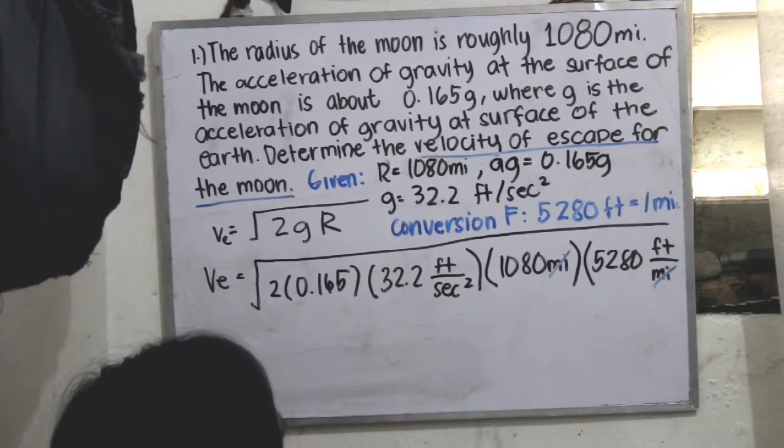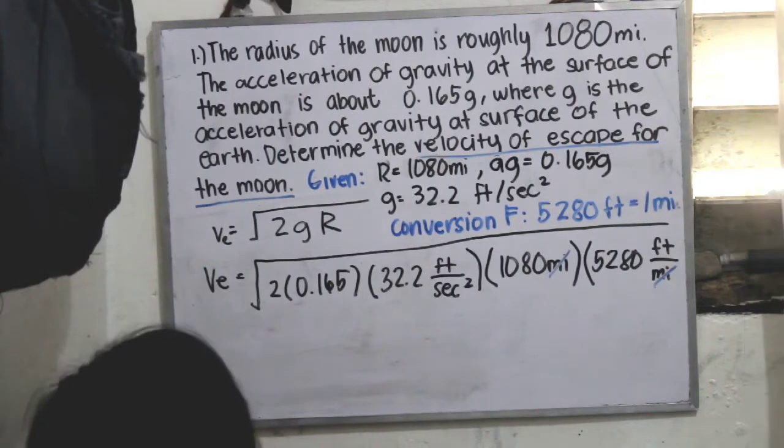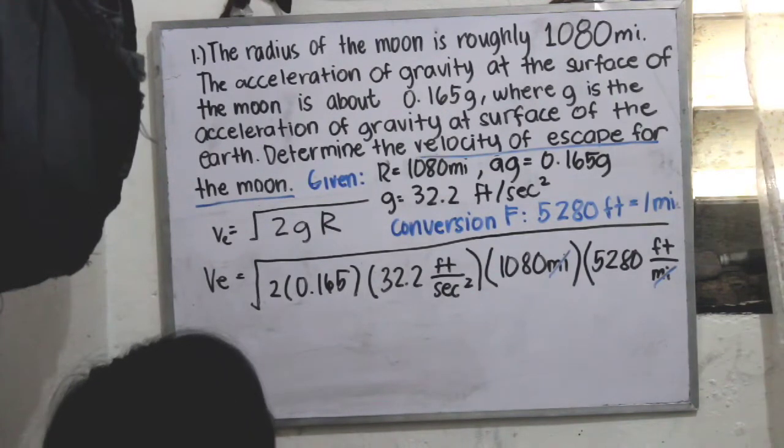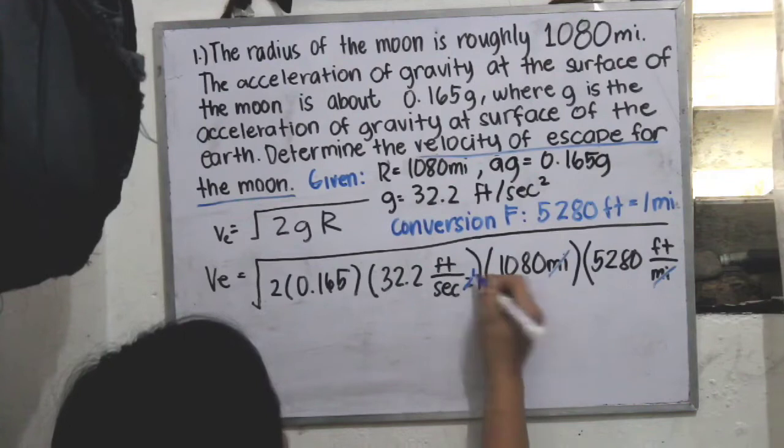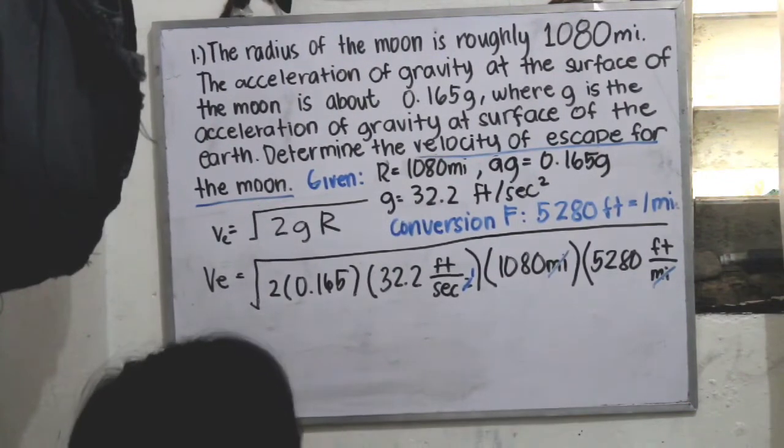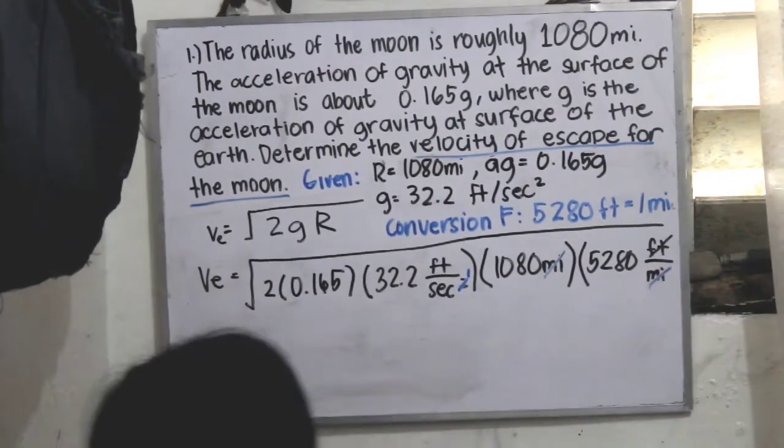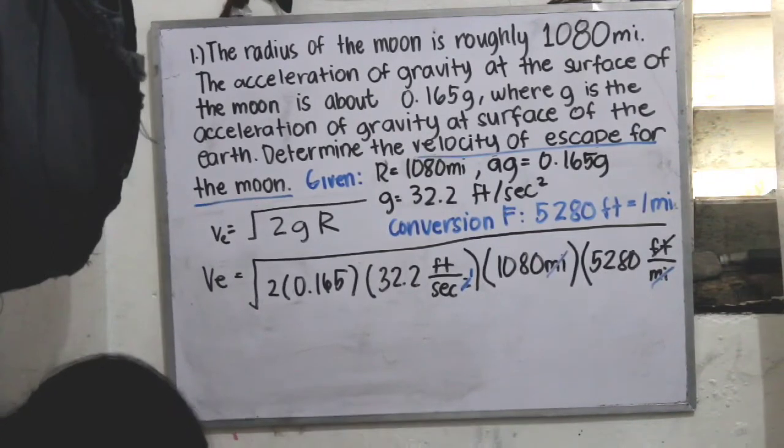And then we are left with feet squared and seconds squared. Since it is square root, then we will be having the remaining, which is feet per second.